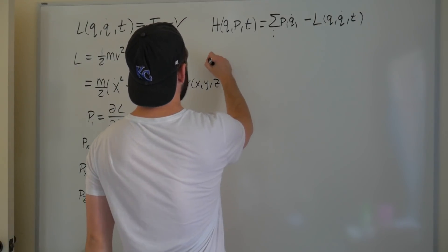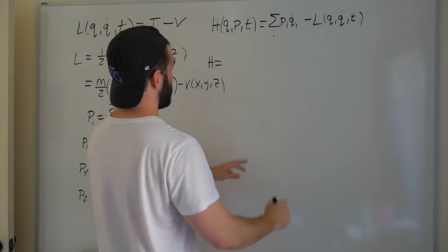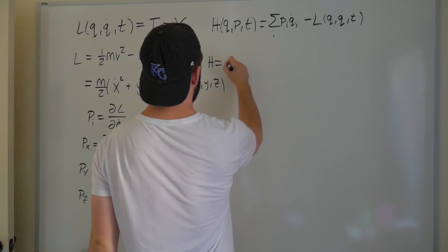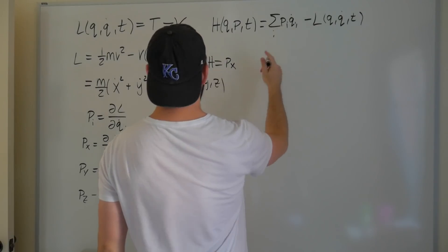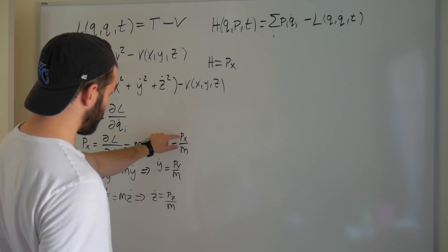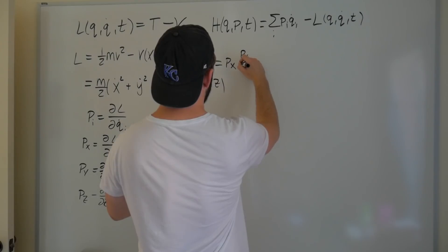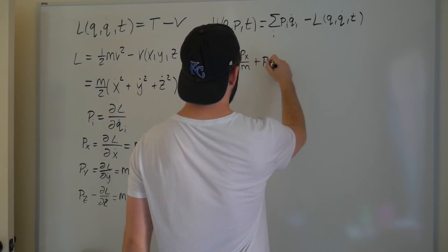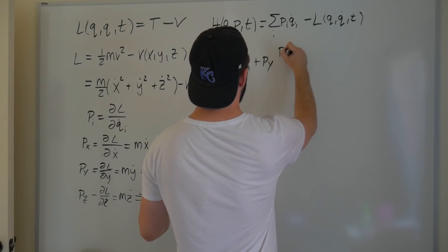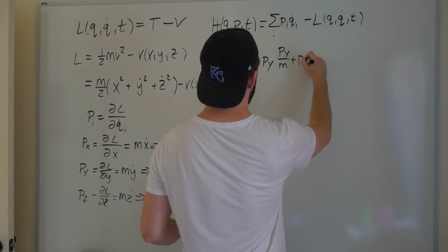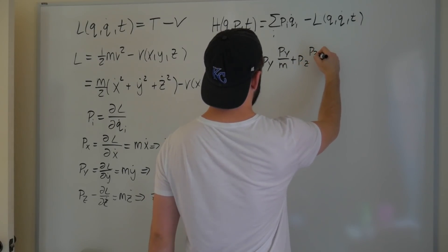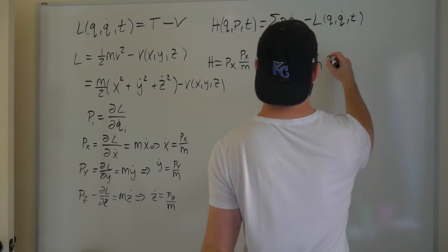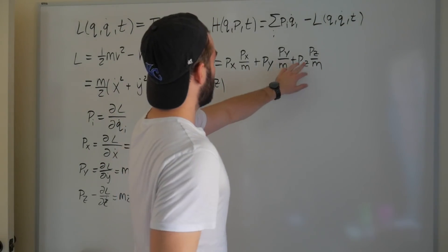So that tells us that H is equal to pi qi dot. So the first one, our pi is going to be px, times qi dot, which is going to be px over m, plus the next one over. So that's going to be py times py over m, plus pz times pz over m. Do I have room for this? I'm going to make there be room.